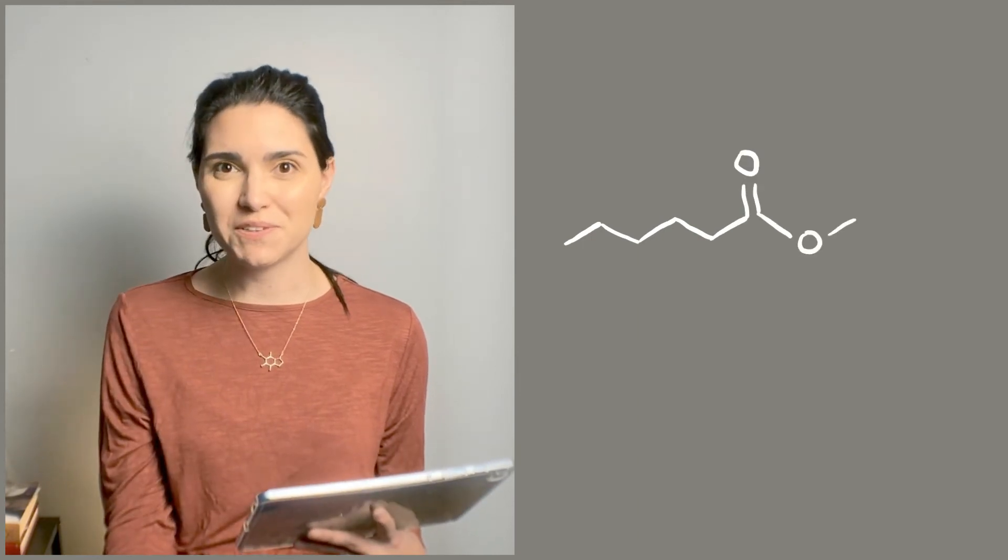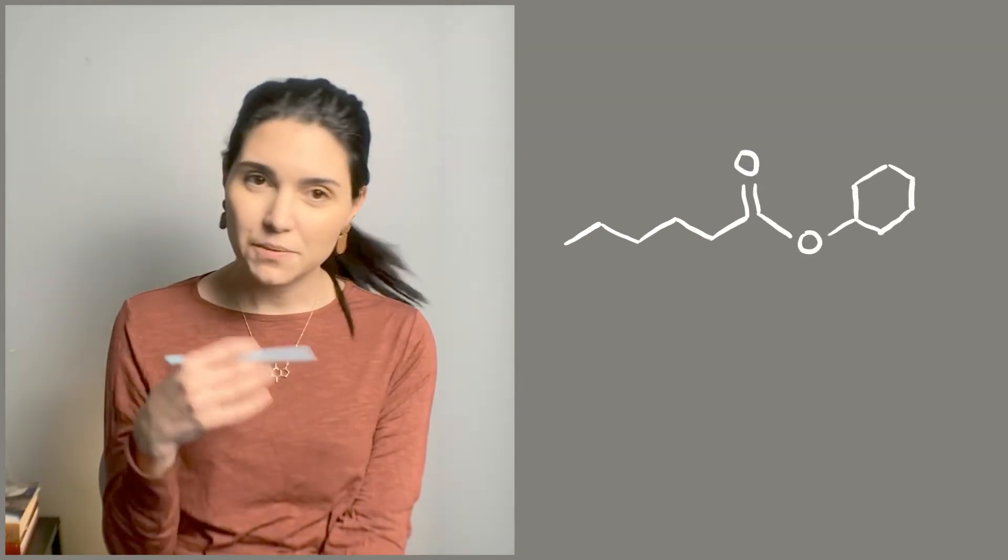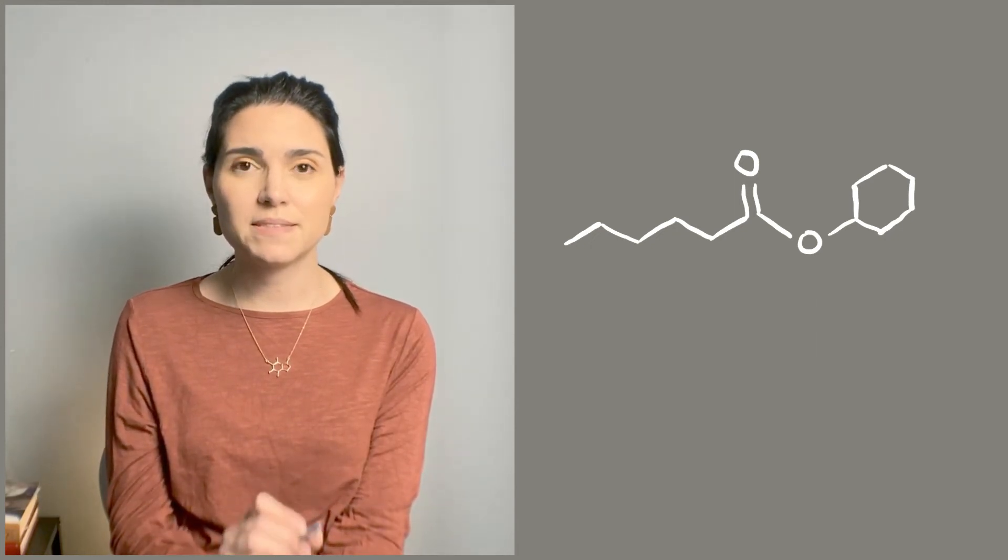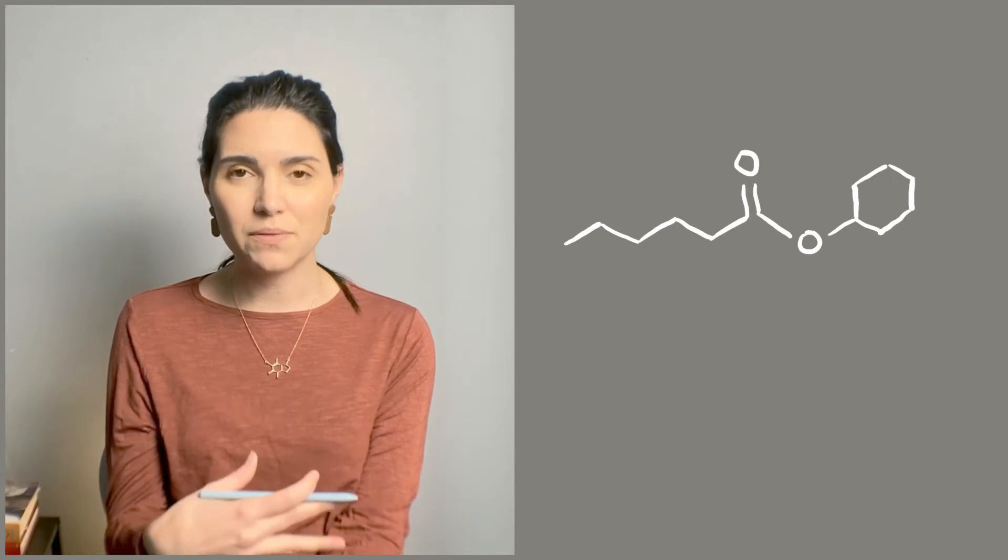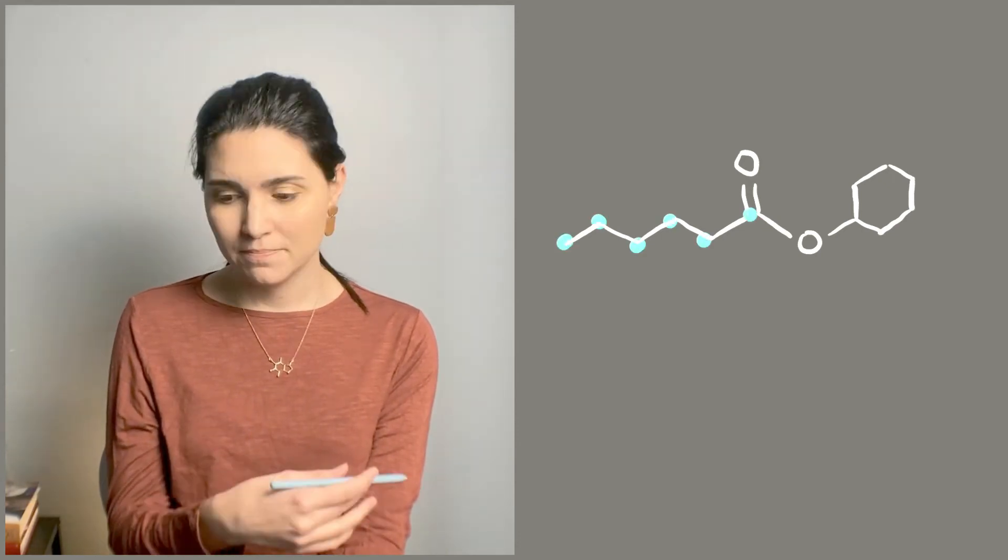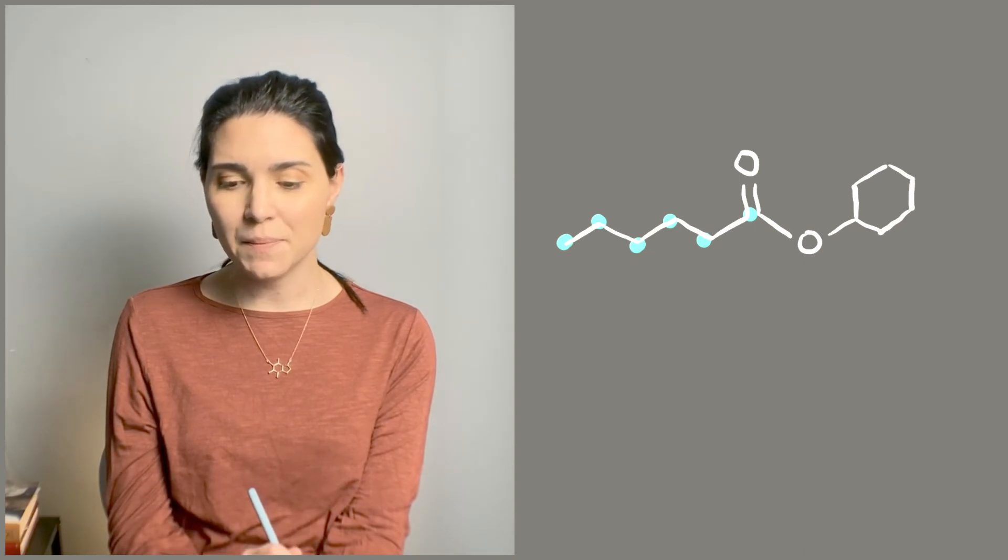Let's name one more ester just to make sure we understand all of these rules. So here's our next ester example. And right away, we know we have to look for that C double bond O carbon. And we're going to count the longest chain we can find including that C double bond O.